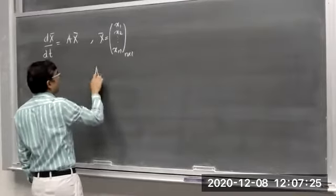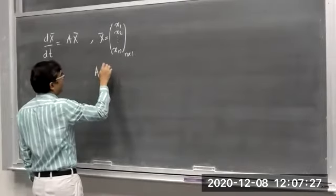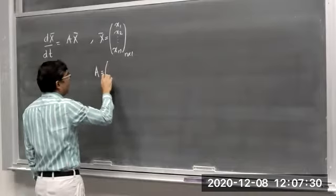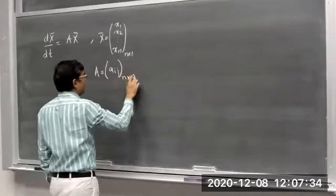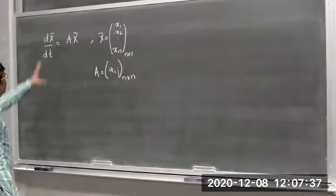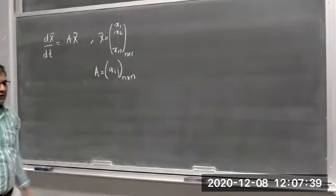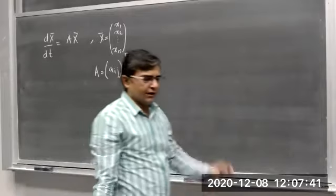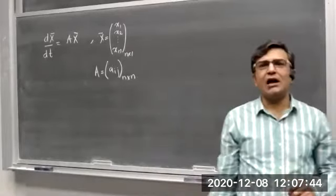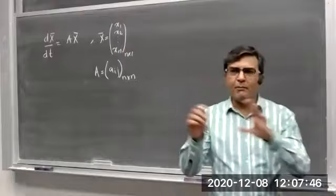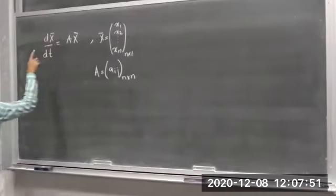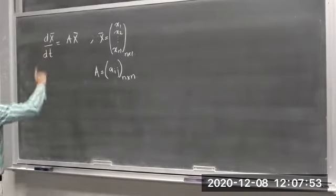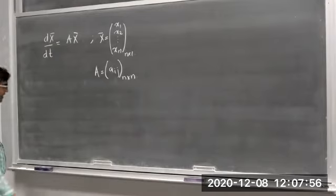The matrix A is the coefficient matrix with entries aij, and its order is n×n. This is a system of first order differential equations. It is a homogeneous system and its coefficients are constant, meaning the matrix A is a constant matrix. We discussed that we are going to solve this kind of system, and this is the matrix form of that system.